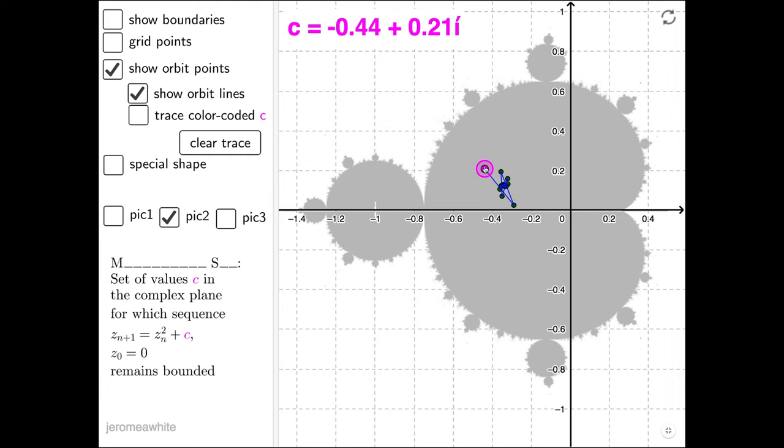To create the Mandelbrot set, we need some part of imaginary numbers and some part of real numbers. Here I am talking about complex numbers. Complex numbers include both values: imaginary part and real part.